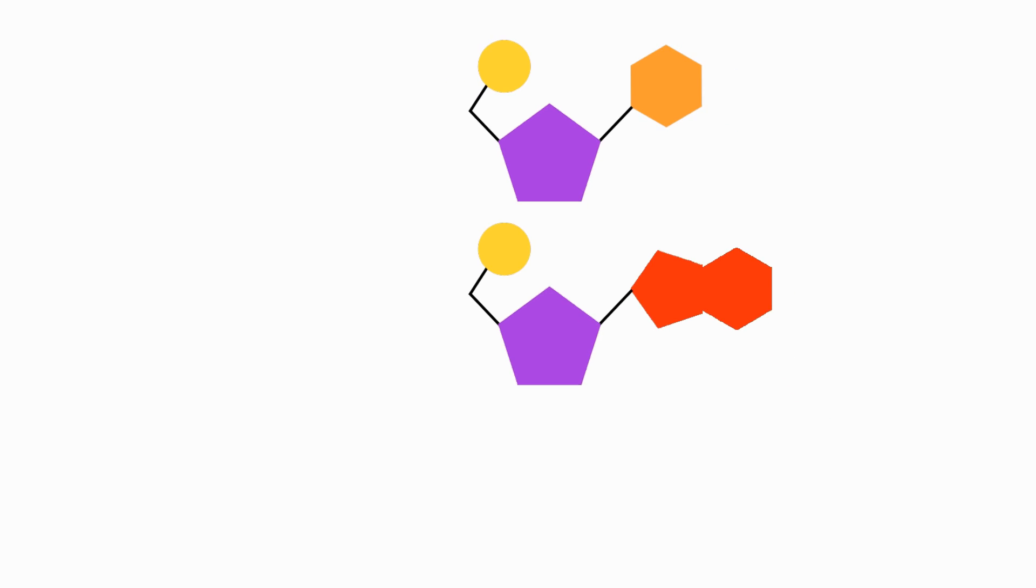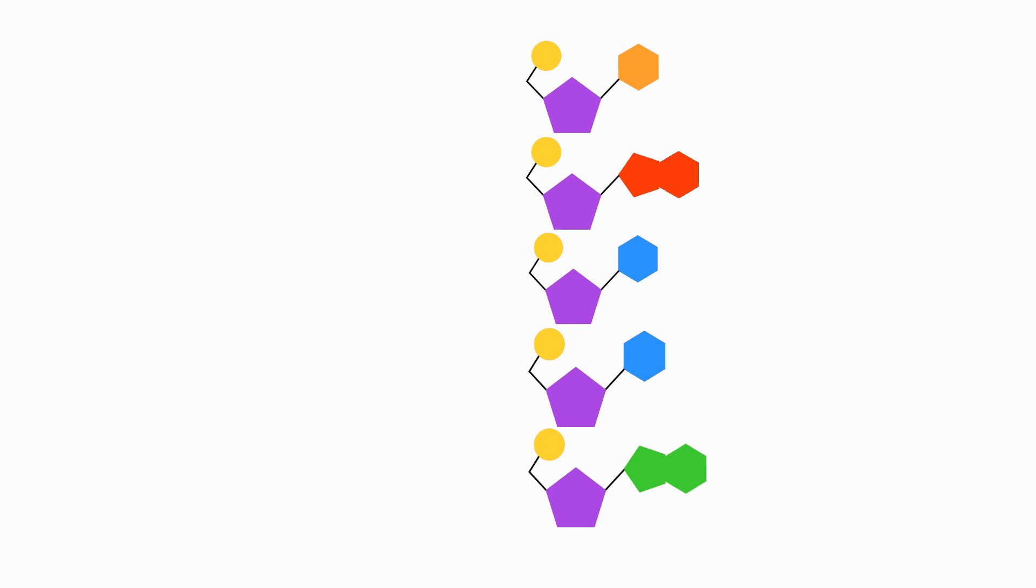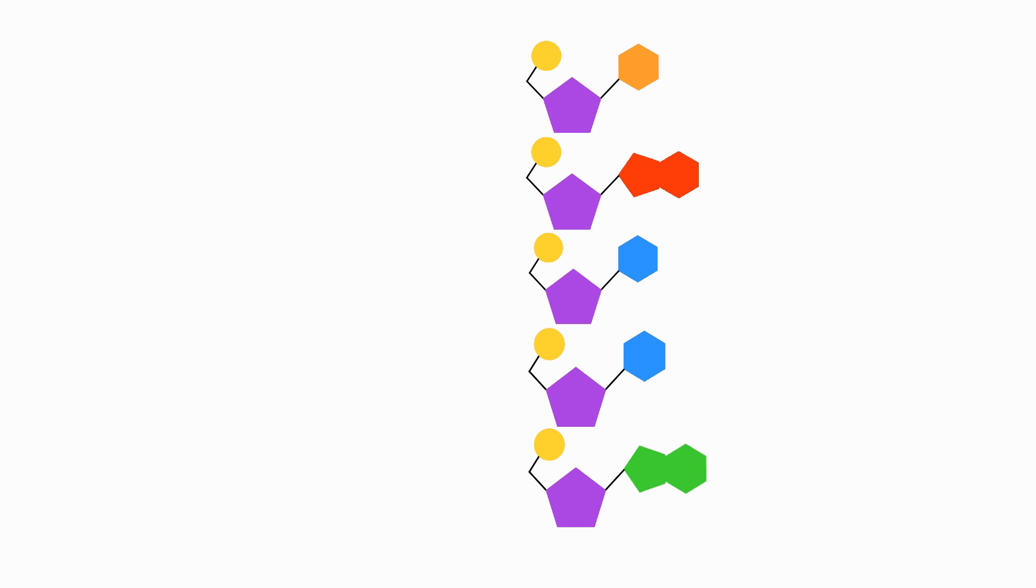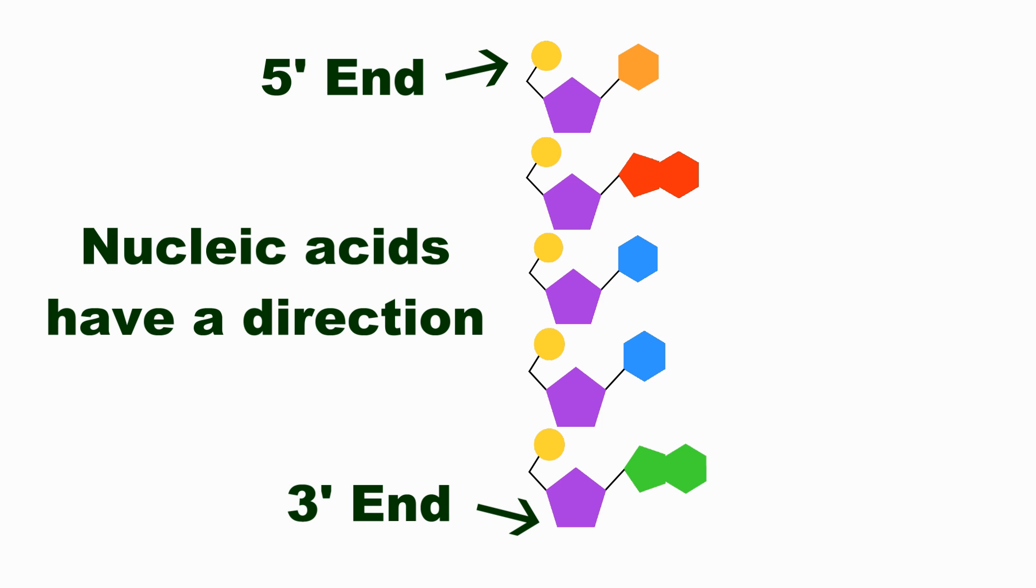This same reaction takes place each time another nucleotide is added, creating a repeating series of sugar and phosphate down the length of the growing molecule, which is called the backbone. You can also see at one end of the molecule there'll always be a free five prime phosphate group, and on the other end of the molecule there'll always be a free three prime hydroxyl group. This allows you to distinguish one end from the other, called the five and three prime ends.